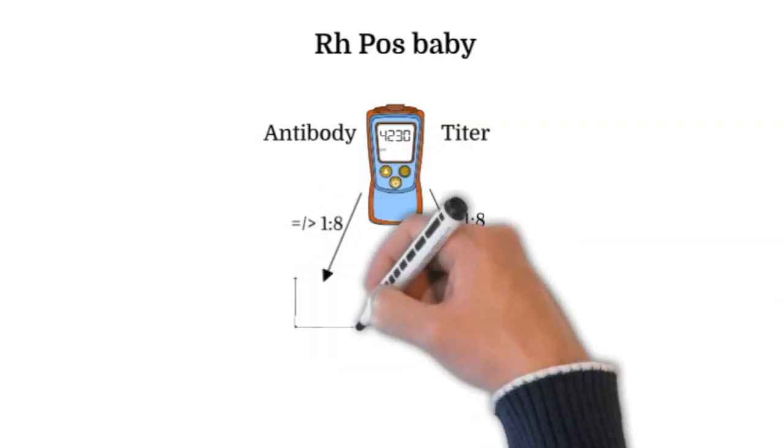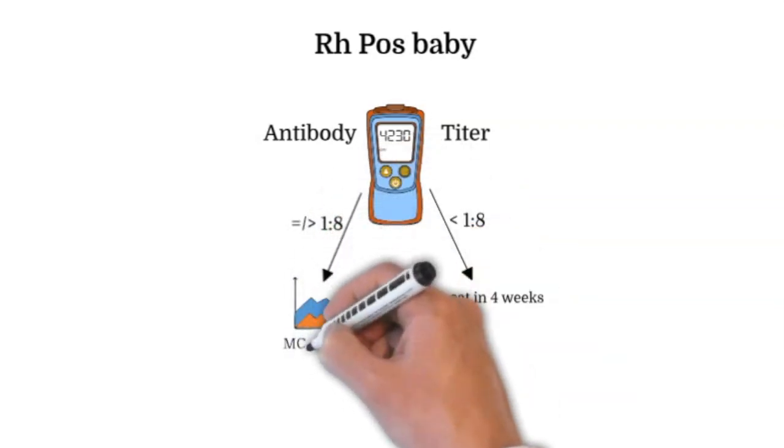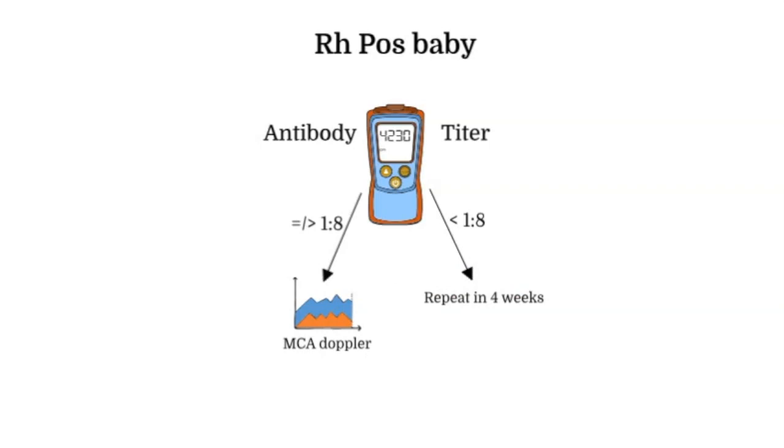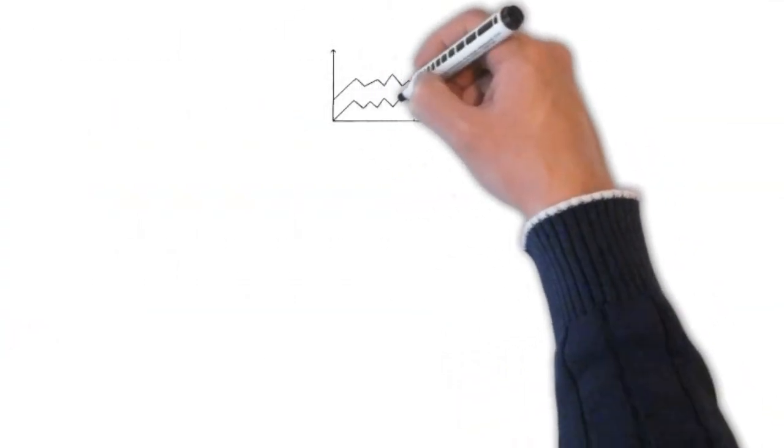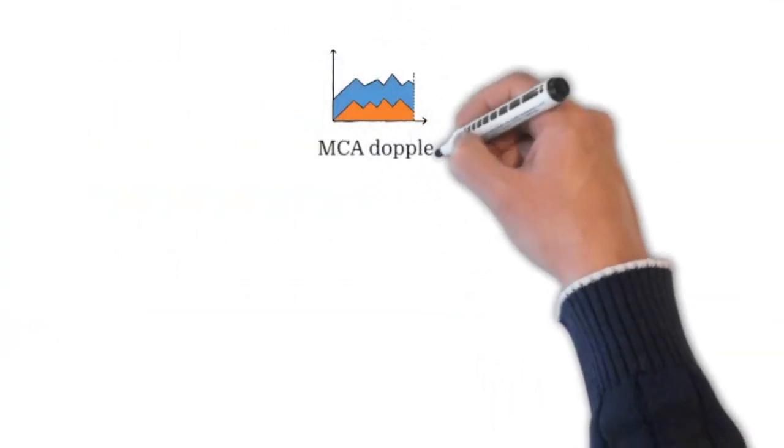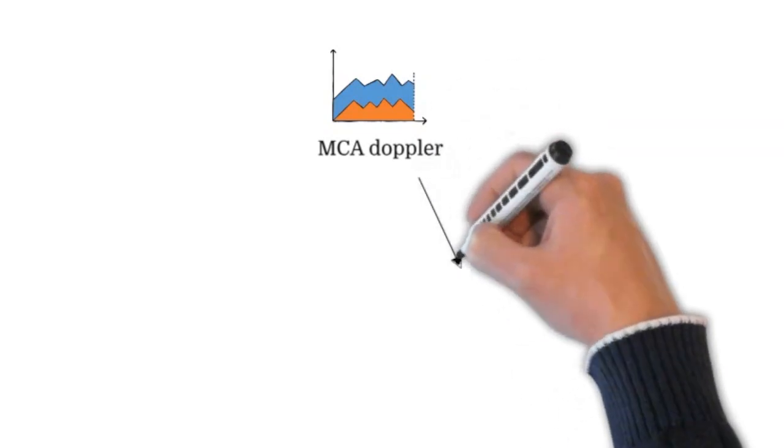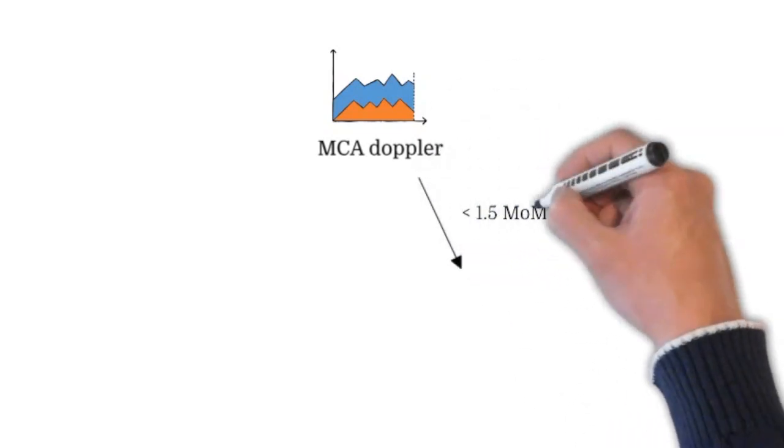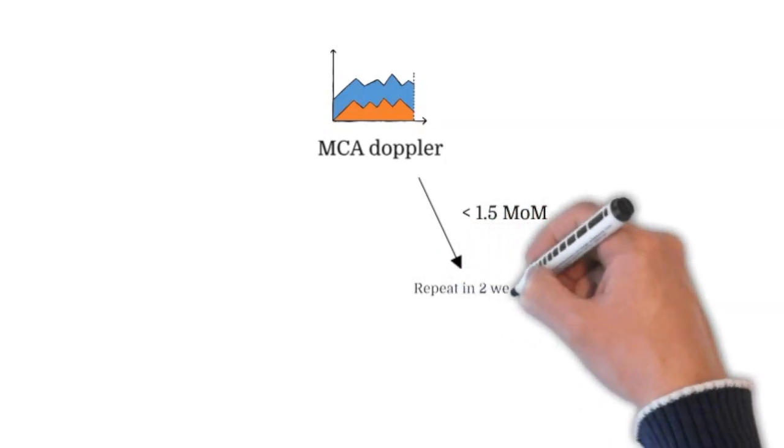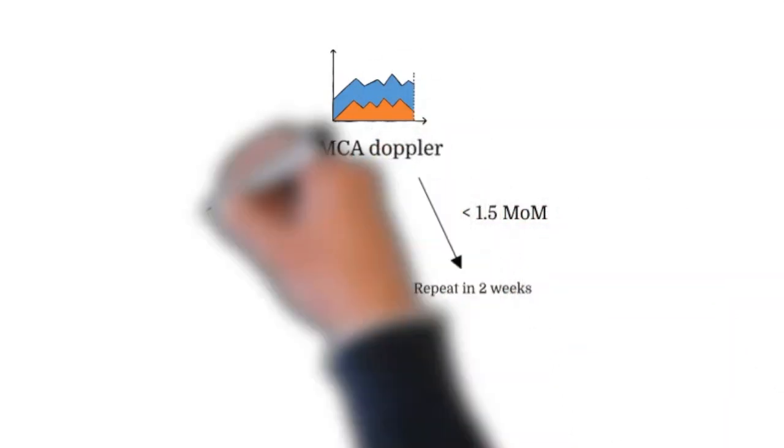But if the titer is at or above 1 in 8, then the next step would be checking the middle cerebral artery Doppler. The MCA Doppler is an effective non-invasive way to monitor for maternal alloimmunization. It's an indirect method to assess for fetal anemia. If the peak systolic velocity remains below 1.5 multiples of the median, then repeat the test in 2 weeks.